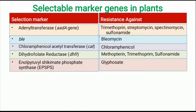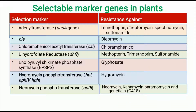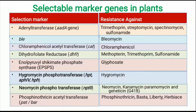EPSPS, which stands for enolpyruvylshikimate phosphate synthase, confers ability to grow in the presence of the herbicide glyphosate. HPT or hygromycin phosphotransferase, also known as APH(4)-Ia or HPH, shows hygromycin resistance. NPT2 or neomycin phosphotransferase II shows resistance against neomycin, kanamycin, paromomycin, and geneticin (G418). Finally, phosphinothricin acetyltransferase, encoded by the PAT or BAR gene, confers resistance against phosphinothricin, with commercial names BASTA, LIBERTY, and HERBIACE. So when we hear 'Liberty Link cotton,' it means it shows resistance against the herbicide Liberty, which is phosphinothricin.